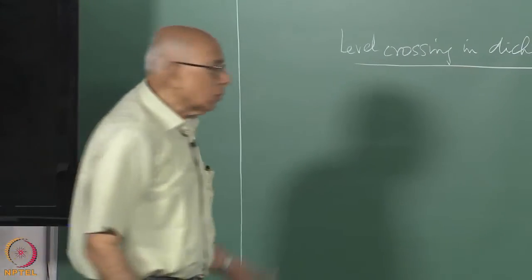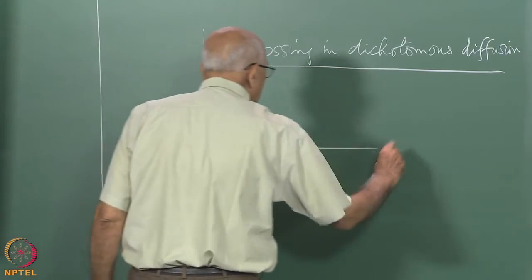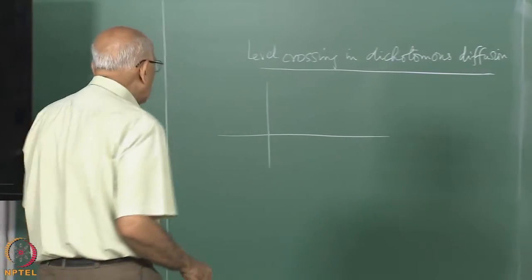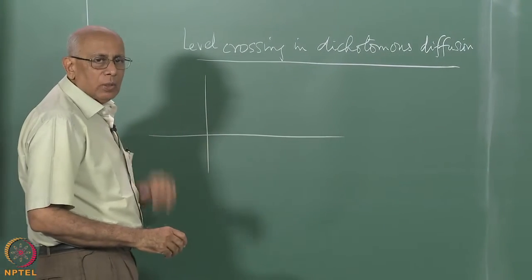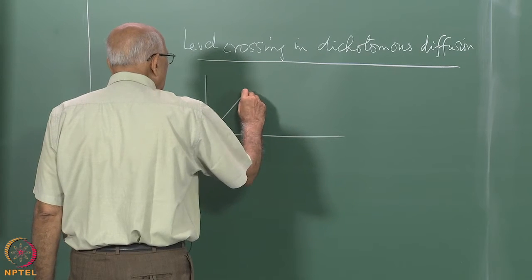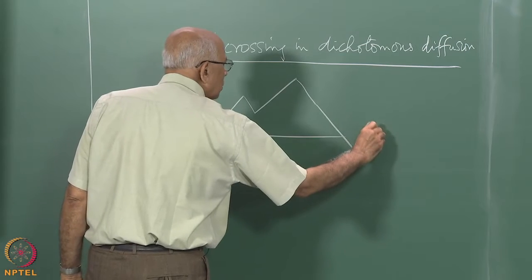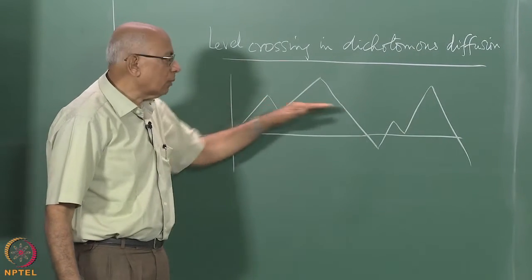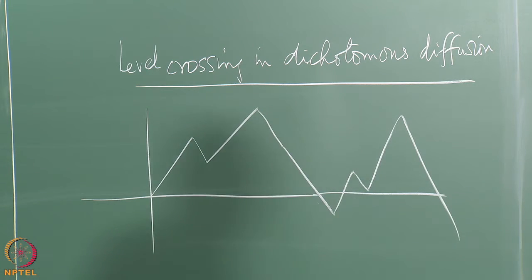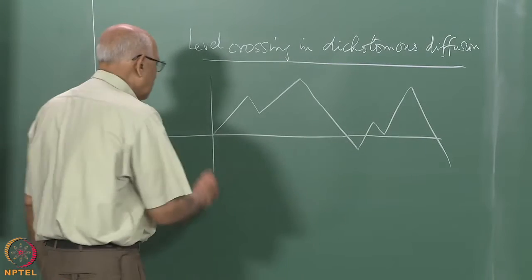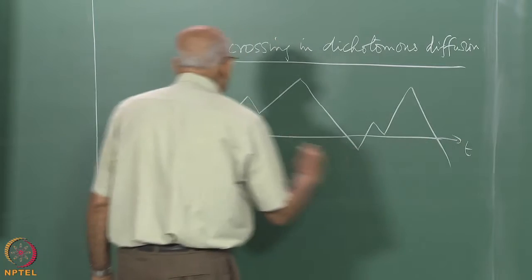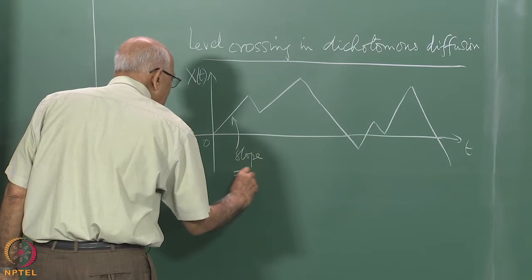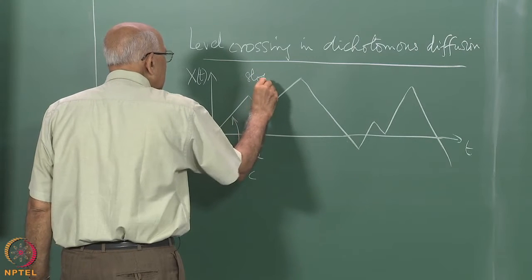Recall what dichotomous diffusion looks like: we have a particle moving on the x-axis with velocity either plus c or minus c, reversing direction randomly. A typical trajectory starting from the origin in the plus-c state goes up, then reverses direction and keeps doing this. The slope in the plus state is c, and in the minus state it is minus c.